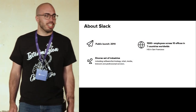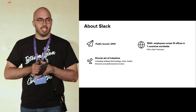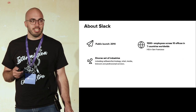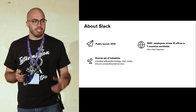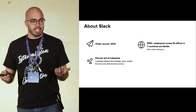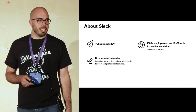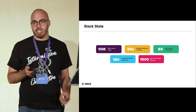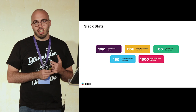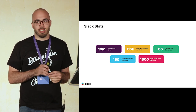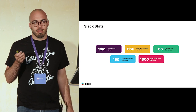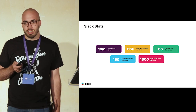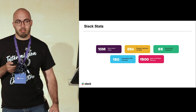We'll start off talking a little bit about Slack. We had a public launch in 2014, and we have 1,500 employees across 10 offices in seven countries. We target a diverse set of industries — obviously technology, but also media, retail, telecoms, and professional services. We have about 10 million daily active users and 85,000 paying customers. Of the Fortune 100 companies, 65 are customers, and we're in 150 different countries with 15,000 apps in our app directory.